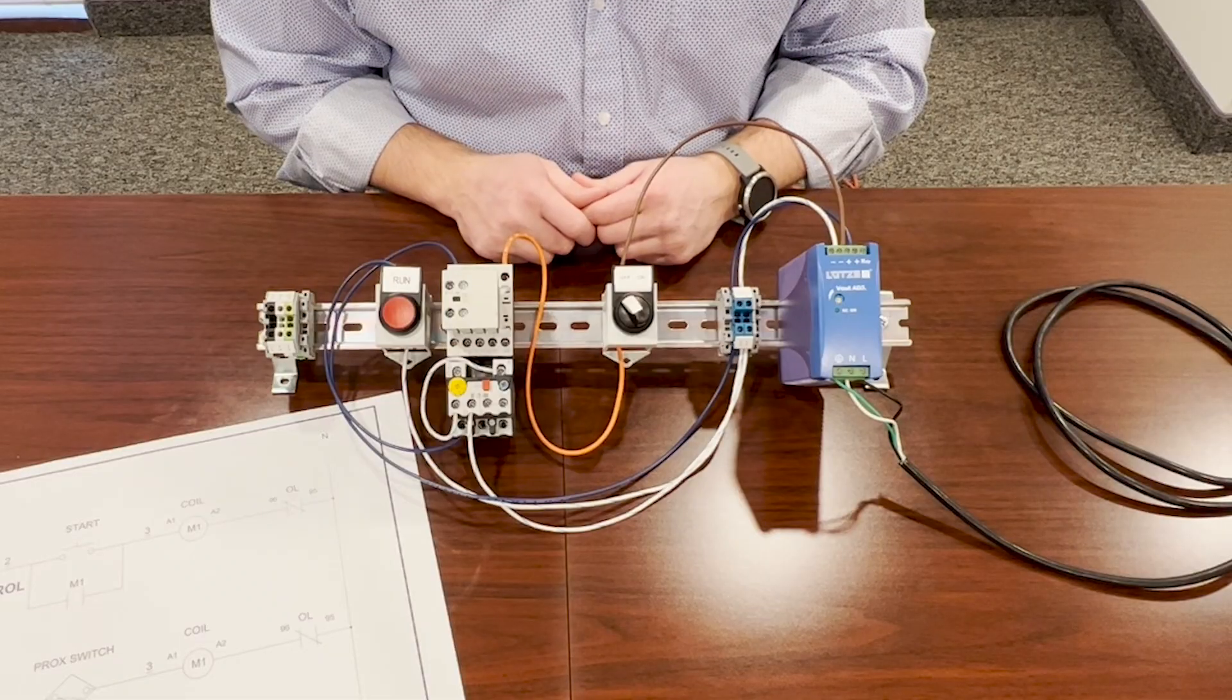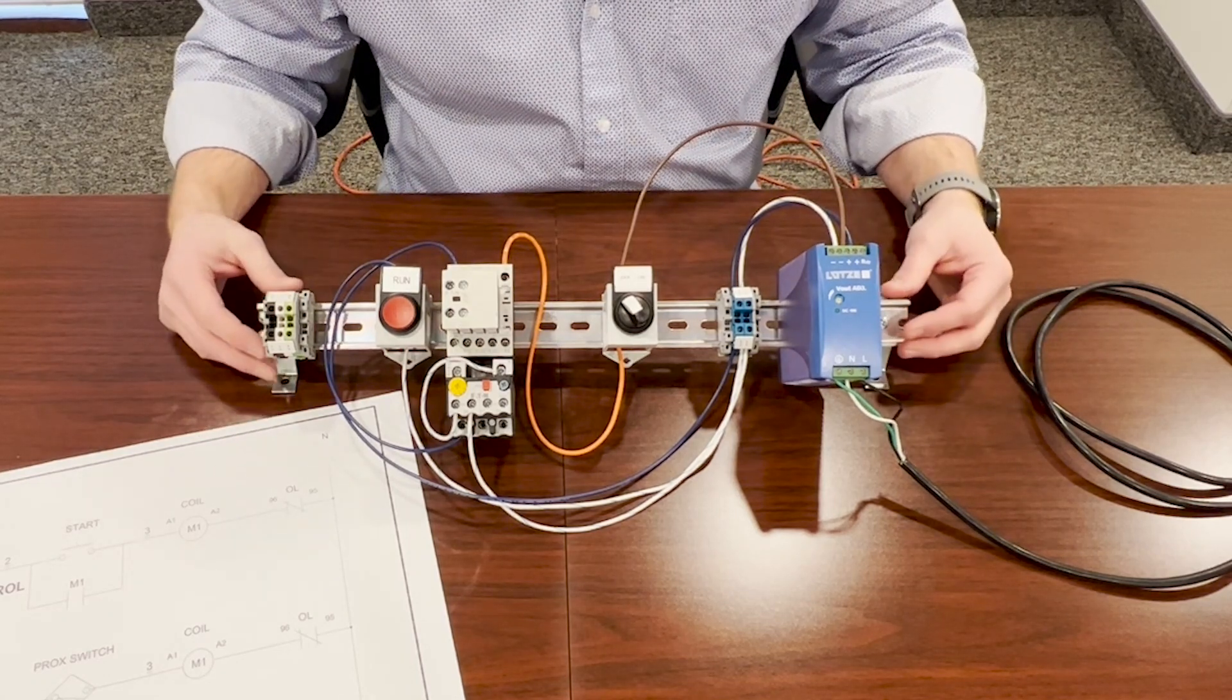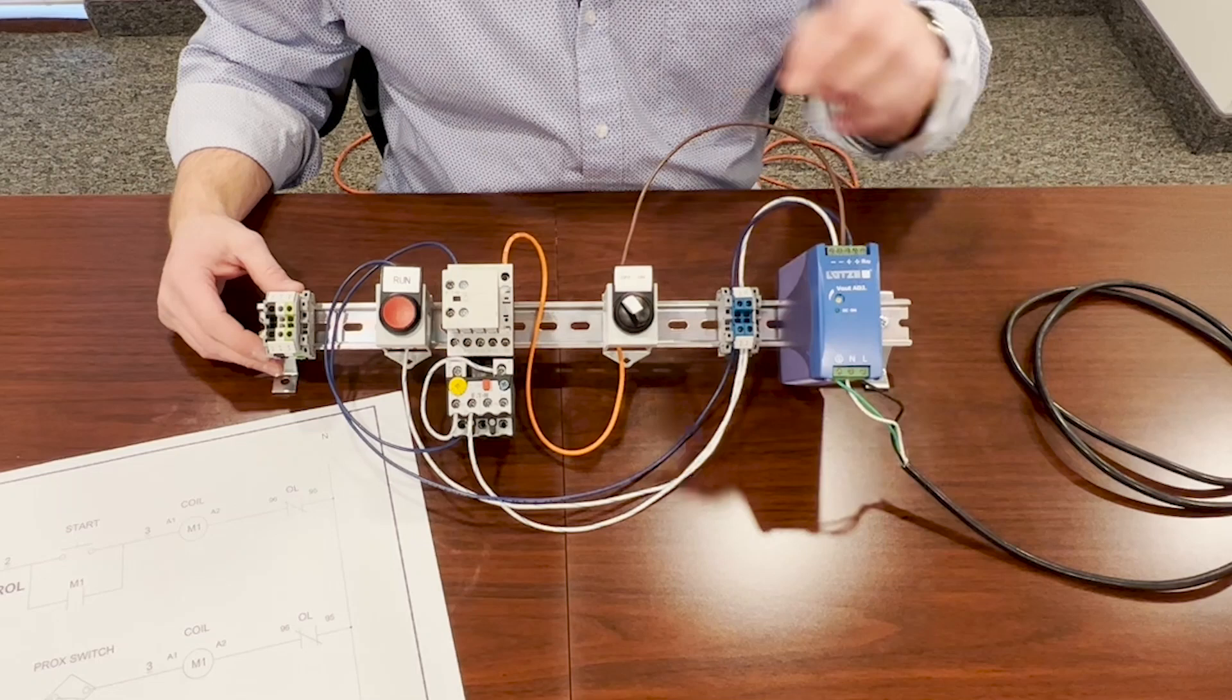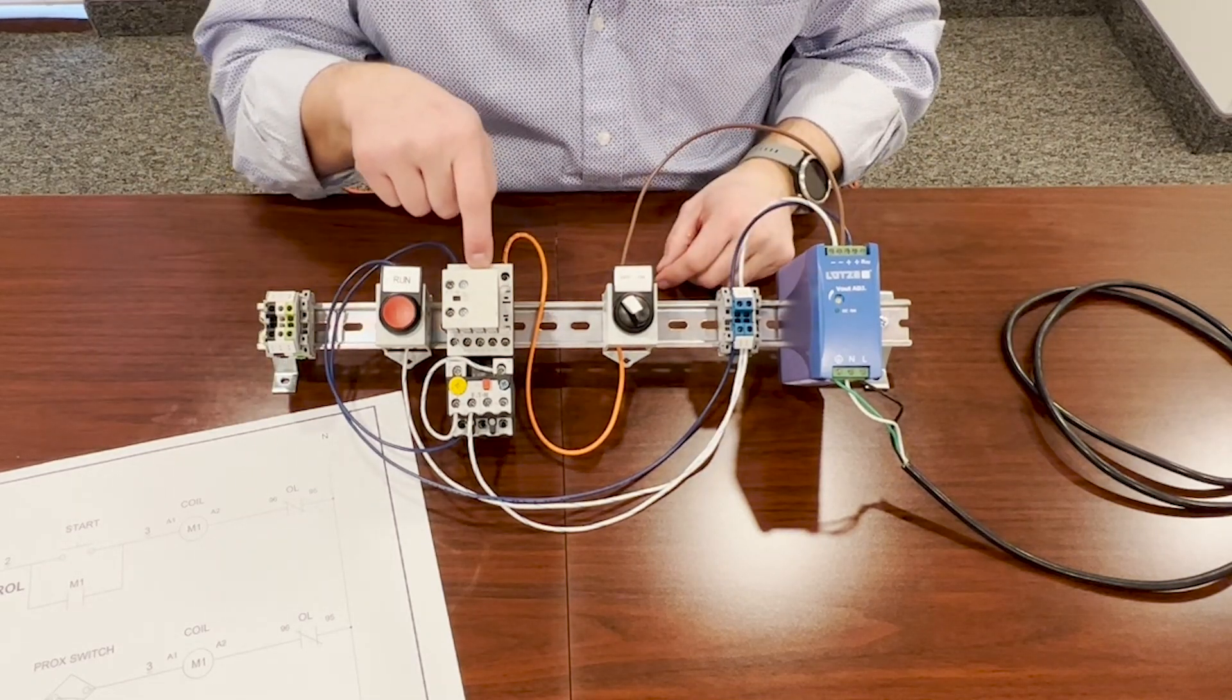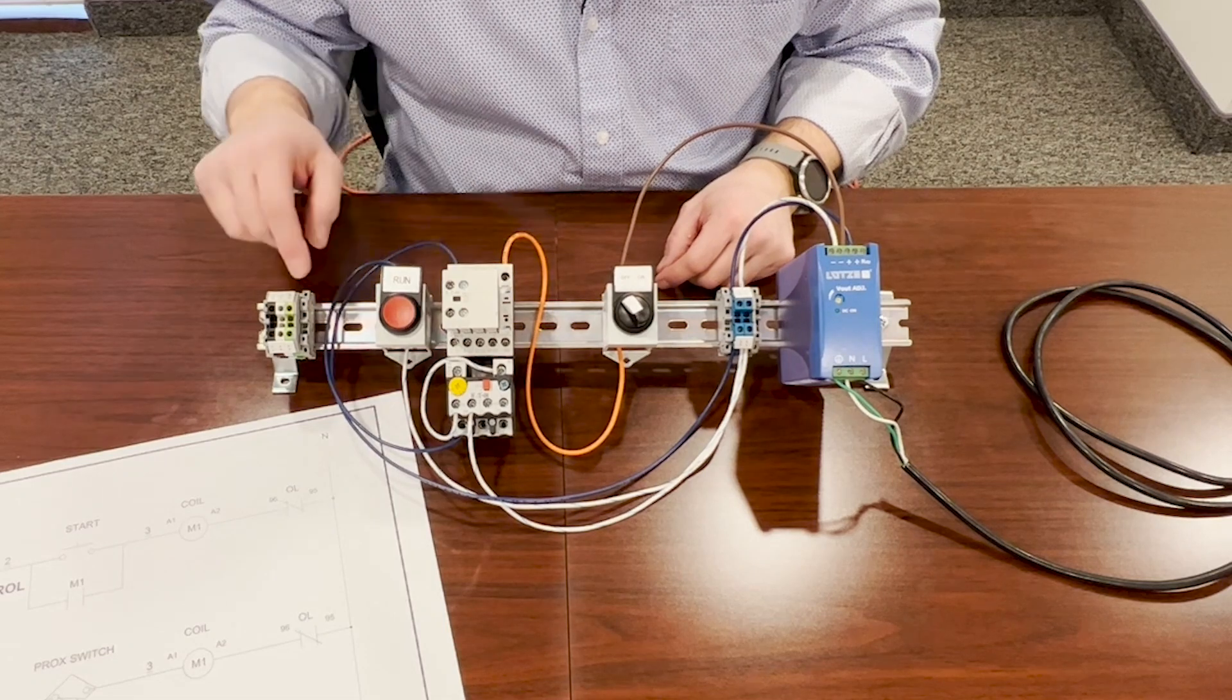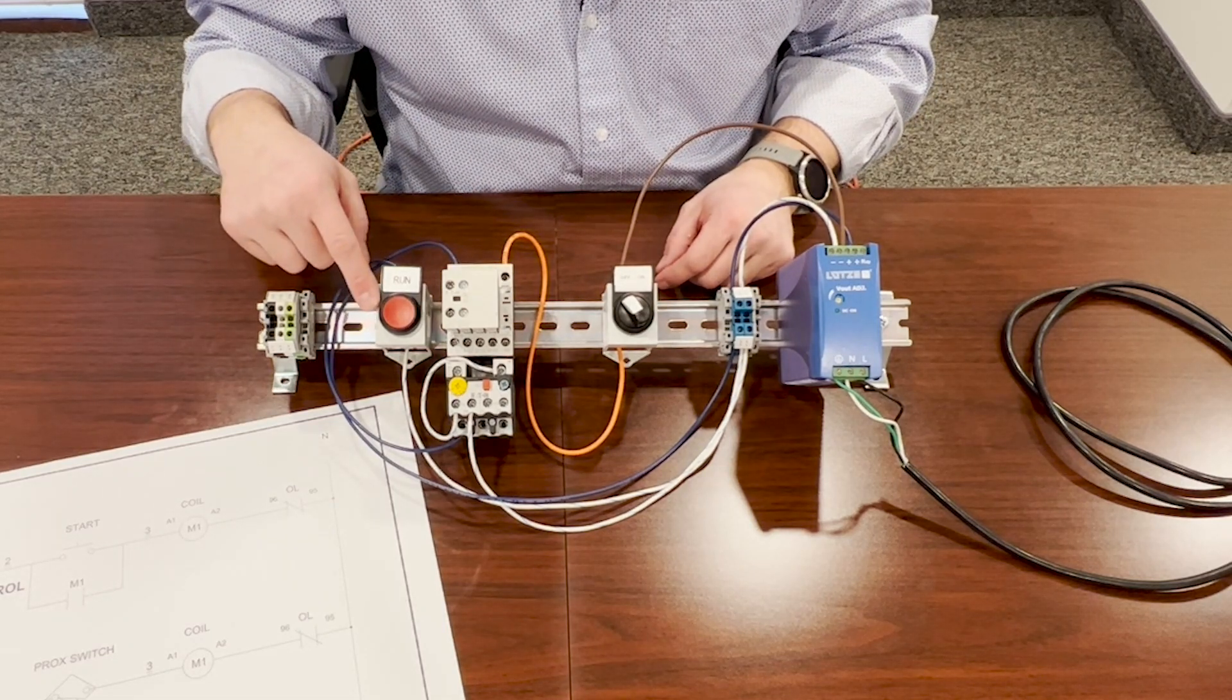So to demo our two-wire control, we've got this nice little demo kit, 24-volt power supply, on-off switch, Eden IEC motor starter, and just a running light, 24-volt LED.